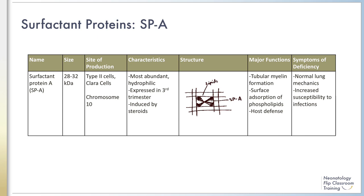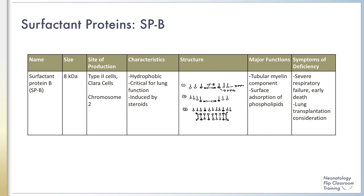In animal models, symptoms of surfactant protein A deficiency include increased susceptibility to infections in the setting of normal lung function. Of note, no humans have been found to have isolated surfactant protein A deficiency.